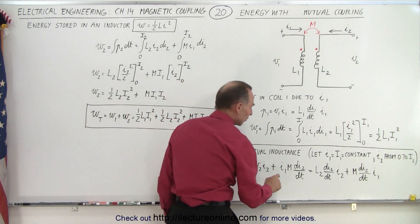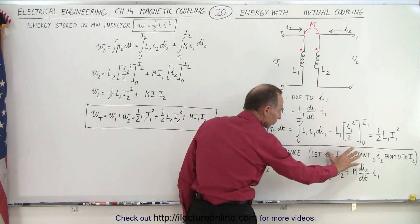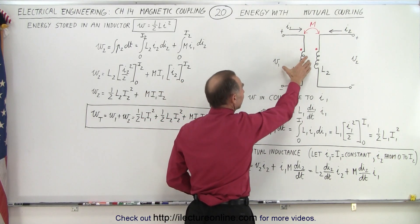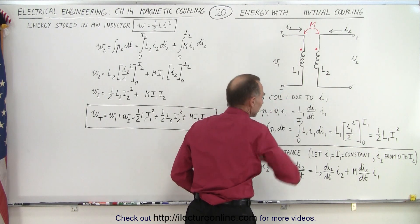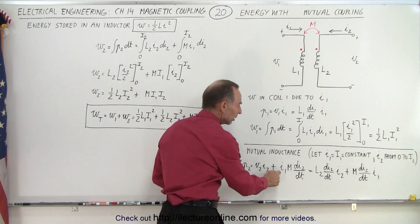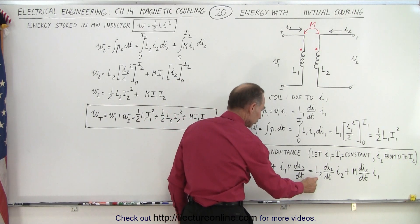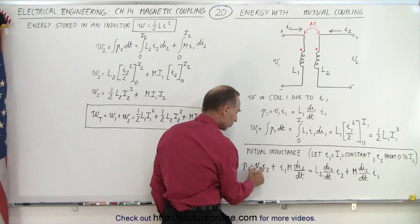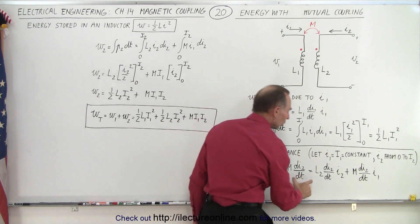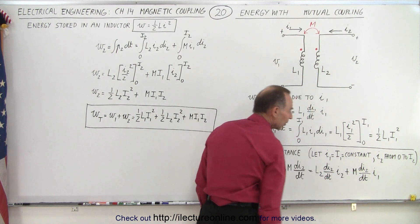To simplify things, we let i1 equal a constant i, so we're no longer letting i1 vary — we already accounted for that in the first inductor. Now we let i2 vary and the mutual inductance is M. Since i1 is simply a constant, we can write the voltage across inductor 2 as L2·di/dt, times the current through inductor 2, and then the mutual voltage is caused by M·di/dt times the constant current i1.